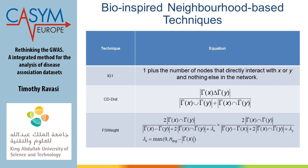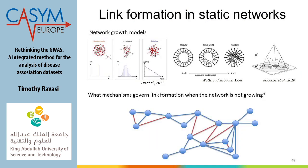So basically, the FS weight is the first index that takes into account the locality or neighboring structure of the network. To cut a long story short: I introduced all those topological predictors and properties, and the question is how we can predict interactions based on the topology of the network, now knowing that networks are not random, not Erdős-Rényi, but scale-free or small-world.